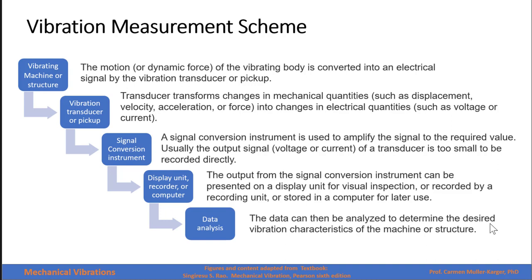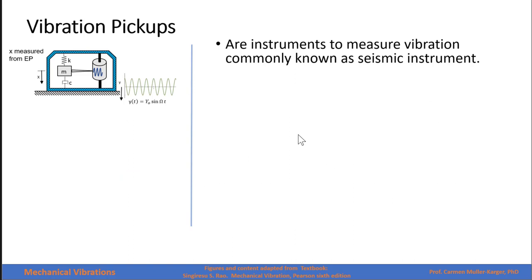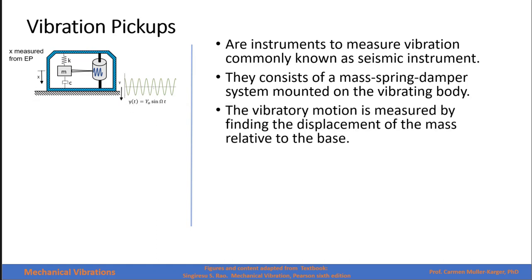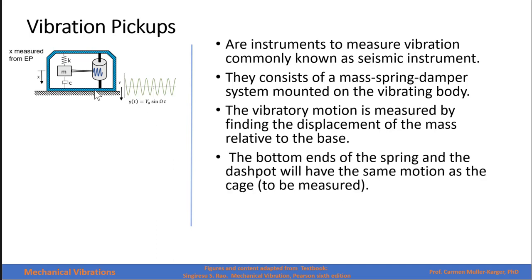In this class we are going to analyze this first step, which is measuring the motion or the dynamic force of the vibrating body. The vibration pickups are instruments to measure vibration, commonly known as seismic instruments. As you see in this figure, they consist of a mass, spring, and damper system mounted on a vibrating body. The vibratory motion is measured by finding the displacement of the mass relative to the base. One end of the spring and the base will have the same motion as the vibratory motion that we want to measure.